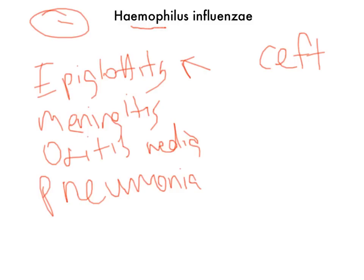A way to remember things about this organism: you can say 'mom goes to the 5 and dime' — 5 and 10 — 'to buy chocolate,' which is what you need to grow it on. Chocolate agar.